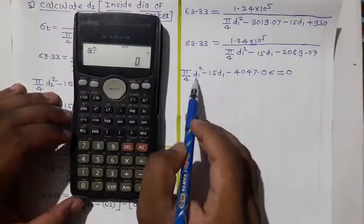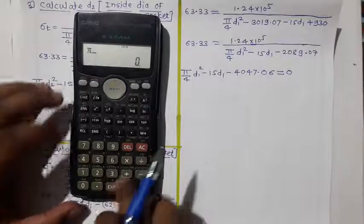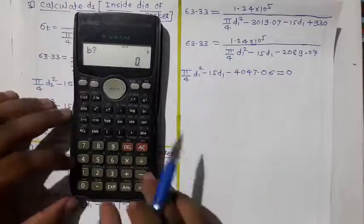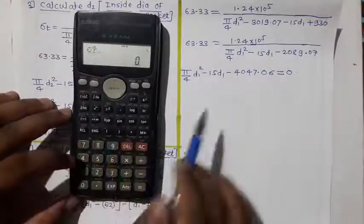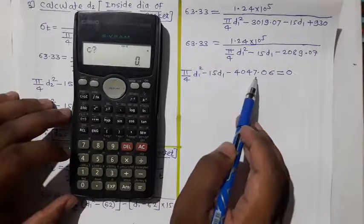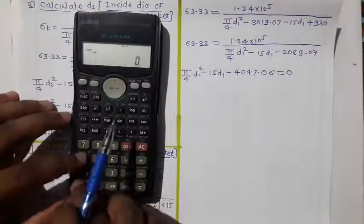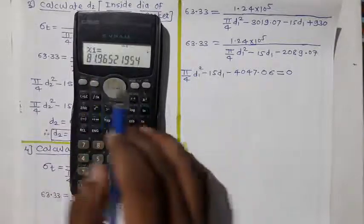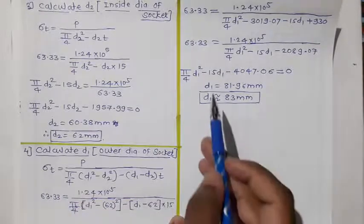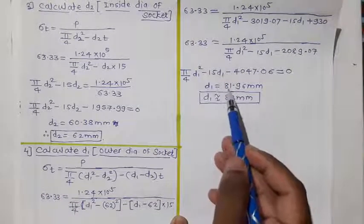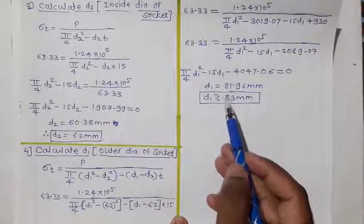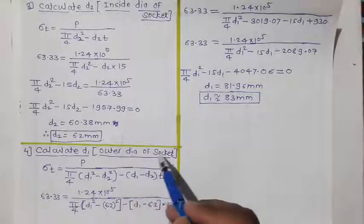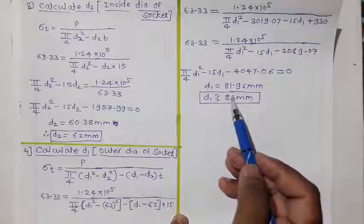Solving this quadratic equation using the calculator, with A = π/4, B = −15, and C = −4047.06, we get D1 = 81.96mm. Rounding up, the final answer for D1 is 83mm. This is the outer diameter of the socket, and it is the second answer for this numerical.